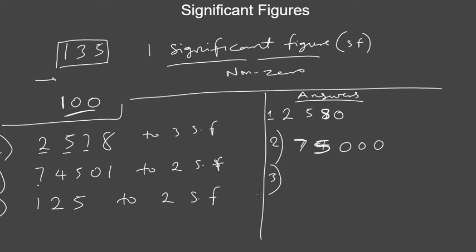For 125 to two significant figures, the first two significant digits are 1 and 2. Should we increase the 2? Look at the number after 2, which is 5. Since this is equal to 5, we increase 2 by one — it becomes 3. The last digit becomes zero. So the answer is 130. That is how you convert numbers to significant figures.